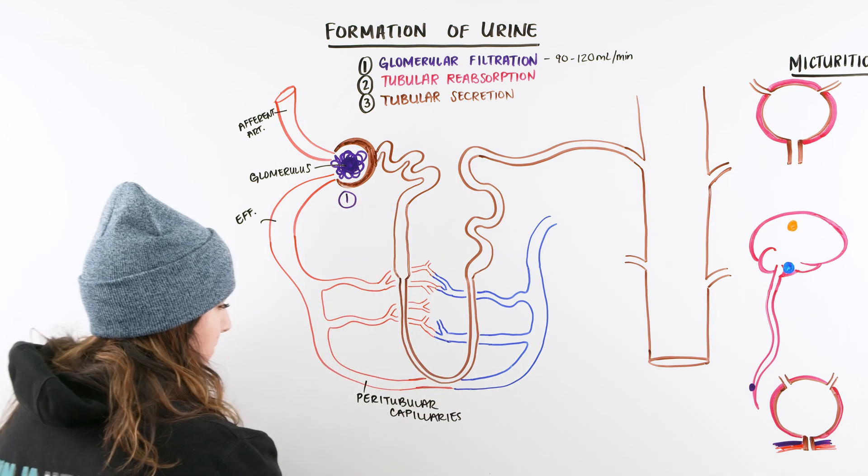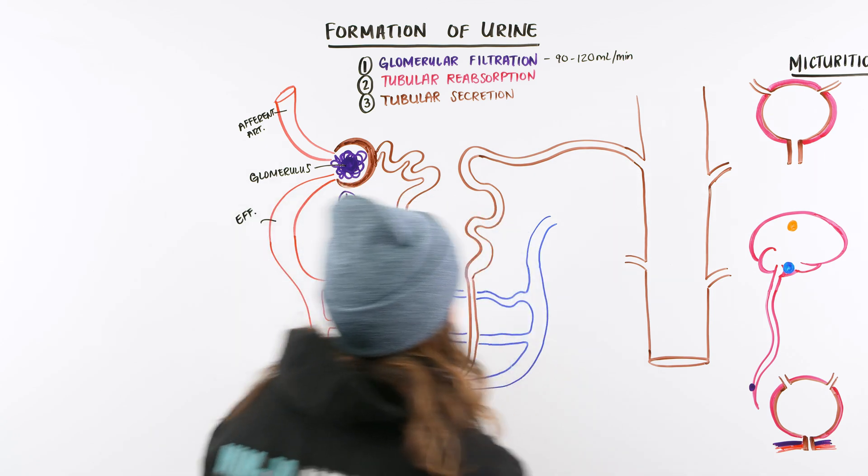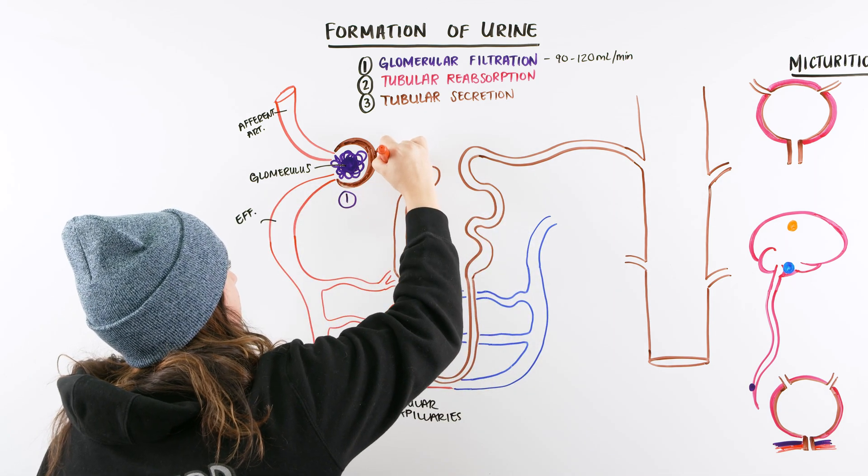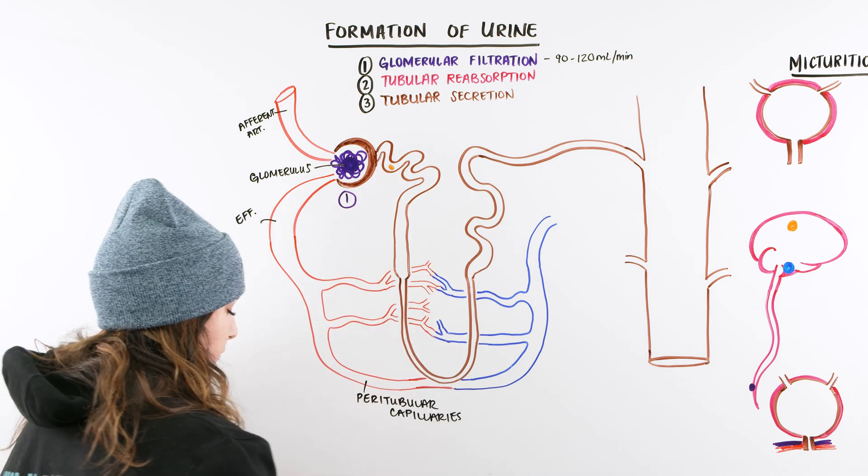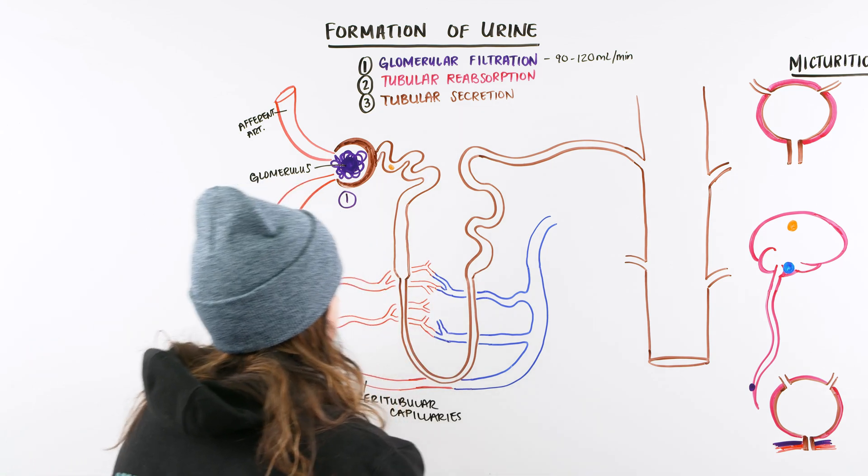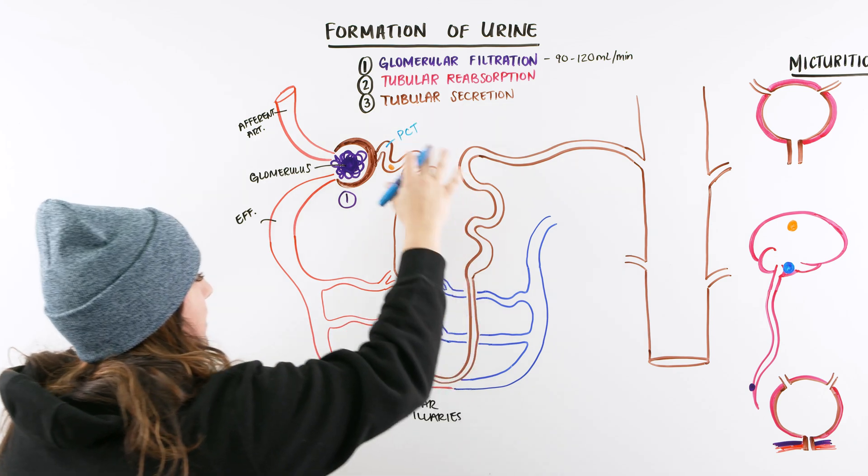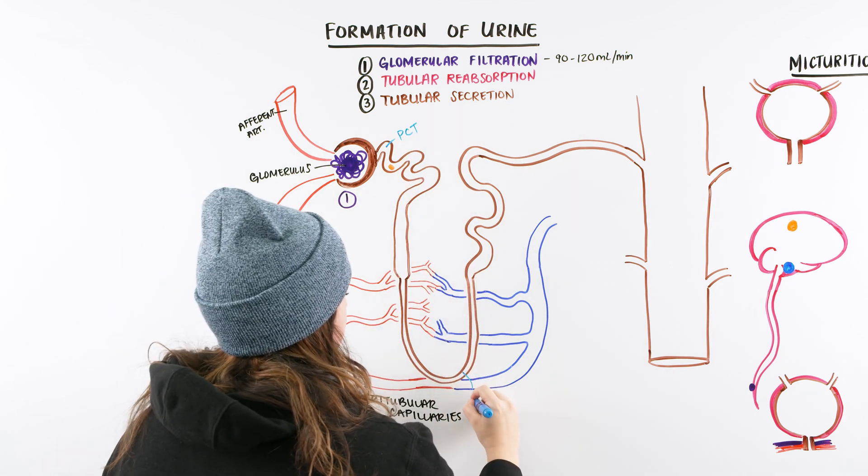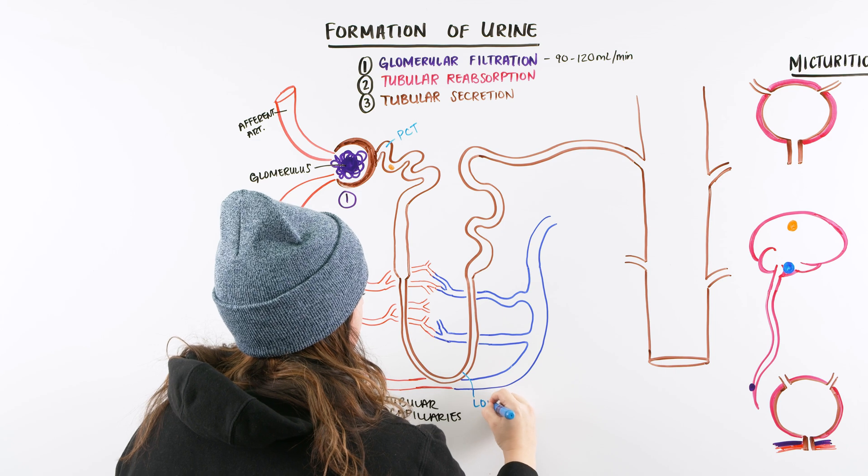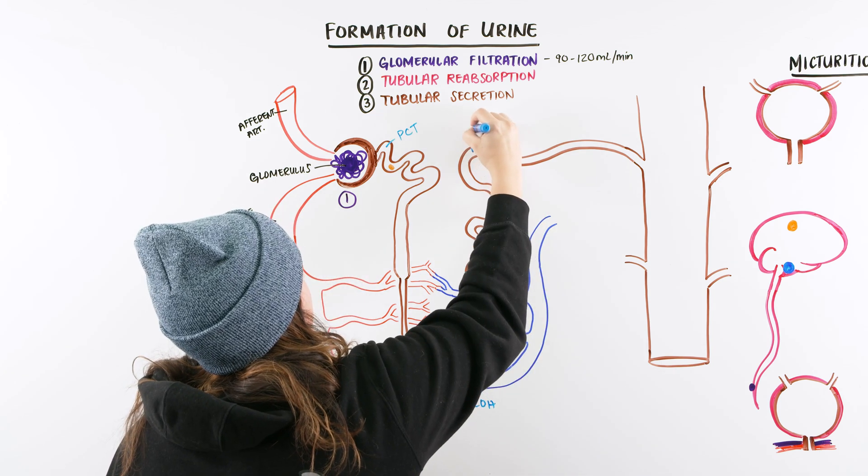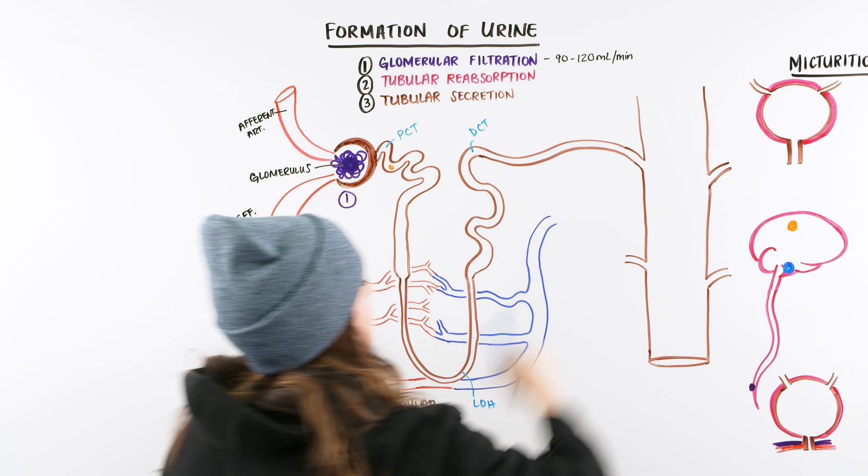Once that filtrate makes it into our tubule here, we are in what portion of our nephron? We are in our proximal convoluted tubule. And we go down here through our loop of Henle, up our distal convoluted tubule, and then our collecting duct.